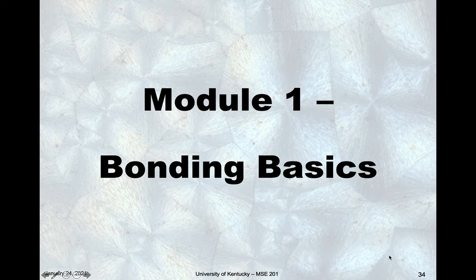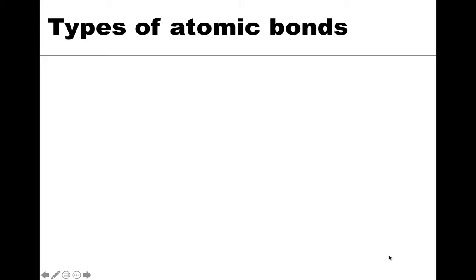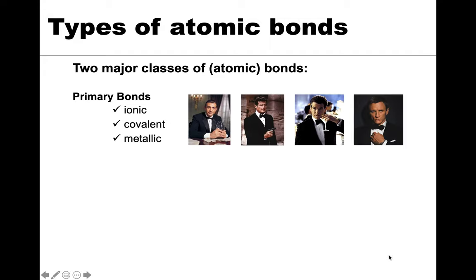In this module we are going to go over some basics of bonding. They'll be closely related to the periodic trends that we talked about in last lecture. Let's first go over the types of atomic bonding that there are — these are ones that are going to sound familiar, and we'll just kind of go over them in a little detail.